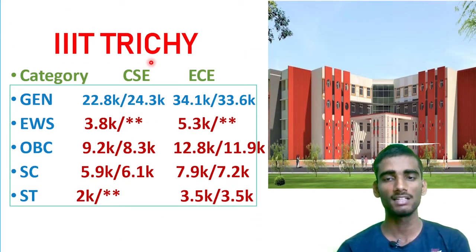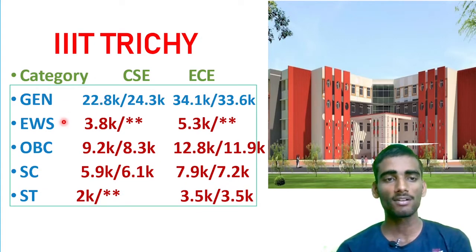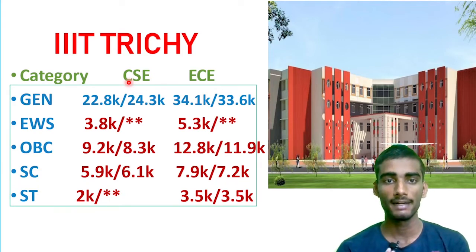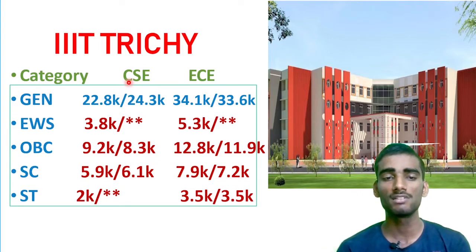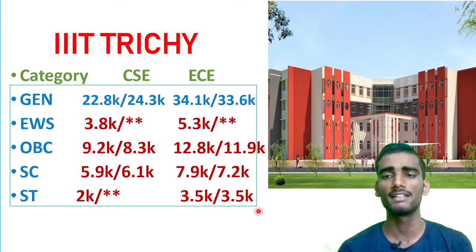Moving to IIIT Trichy — a great and green campus college. For General: CSC 22.8k–24.3k, EC 30.3k–33.6k. Cutoffs depend on various parameters and counseling rounds. EWS: CSC 3.8k, EC 5.3k. OBC: CSC 9.2k, EC 11.9k–12.8k. SC: CSC within 6.2k, EC 7.2k–7.9k. ST candidates: CSC 2k, EC 3.5k–3.56k.